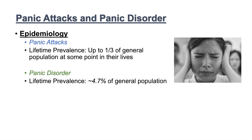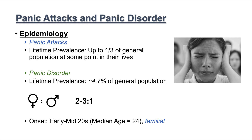With panic disorder, the lifetime prevalence is estimated to be about 4.7% of the general population. Females suffer from panic disorder more than males, about 2 to 3 to 1. The onset of panic disorder typically occurs in early to mid-20s, with a median age of about 24. There is a familial connection, and the prevalence appears to decrease after the age of 60.